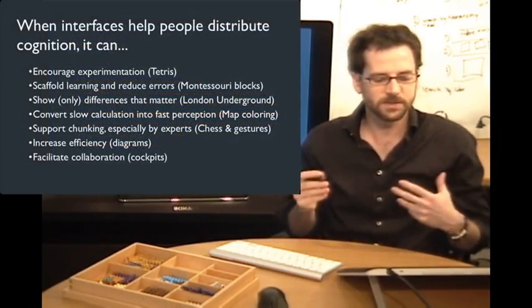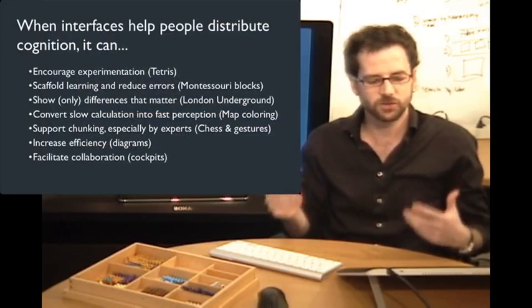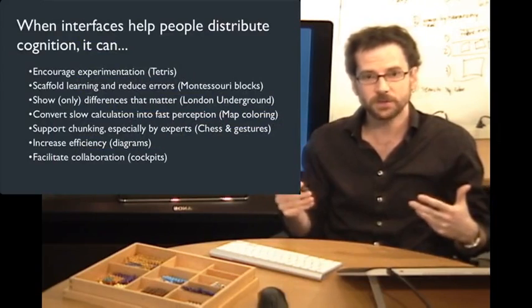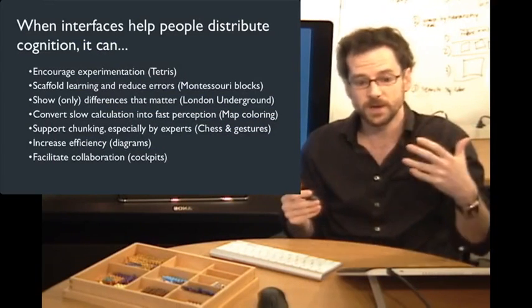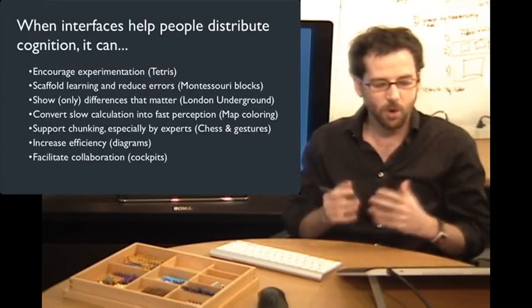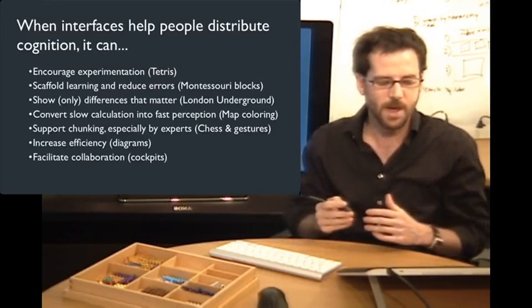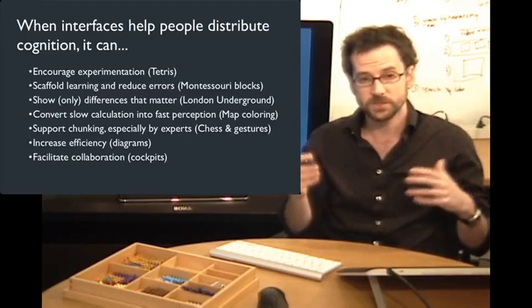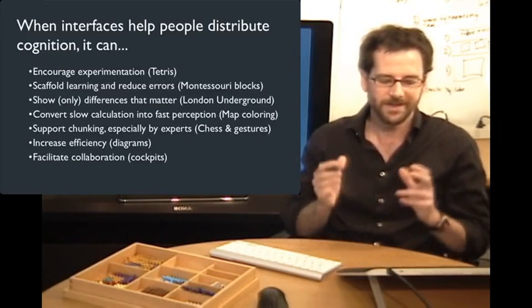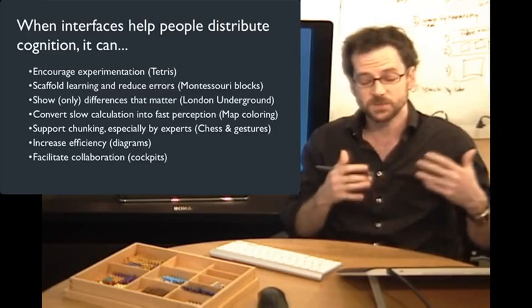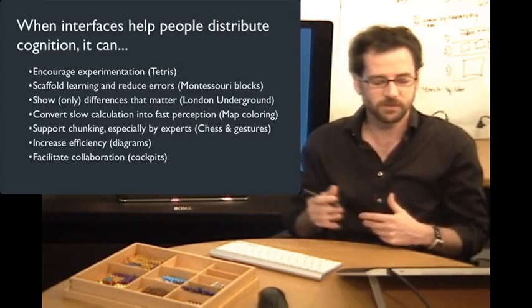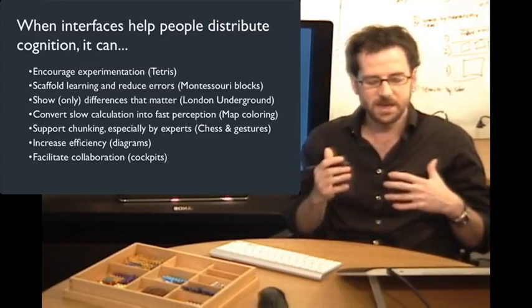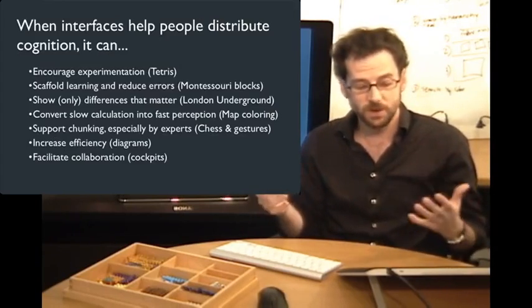When interfaces help people distribute cognition, it can encourage experimentation like we saw in Tetris. It can scaffold learning and reduce errors like we saw with the Montessori blocks. It can show only the differences that matter, like in the London underground map. It can convert slow calculation into fast perception, like we saw with map coloring. It can support chunking, especially by experts, as we saw with chess and gestural interfaces. It can increase efficiency as we saw with diagrammatic representations, and it can facilitate collaboration like we saw in the cockpit.